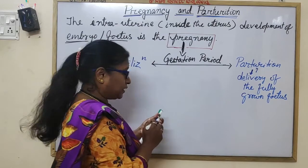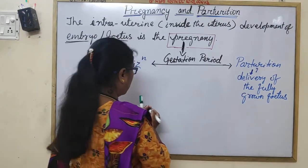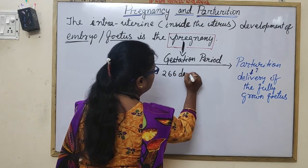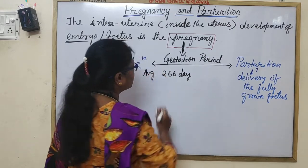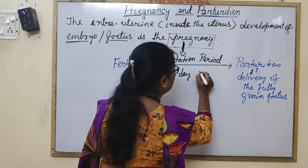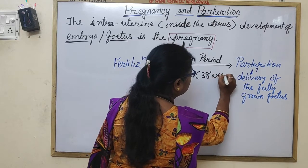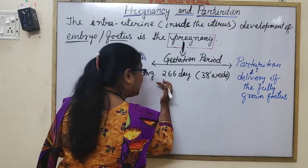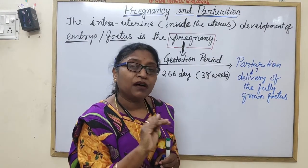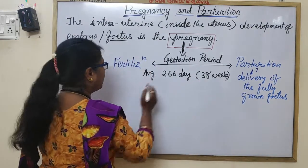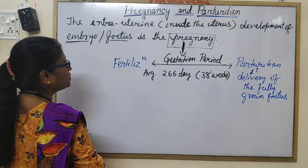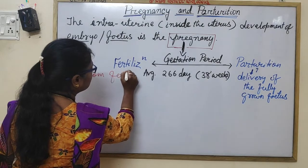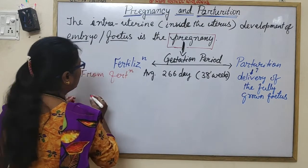On average, the gestation period is 266 days, which is 38 weeks, counted from fertilization.